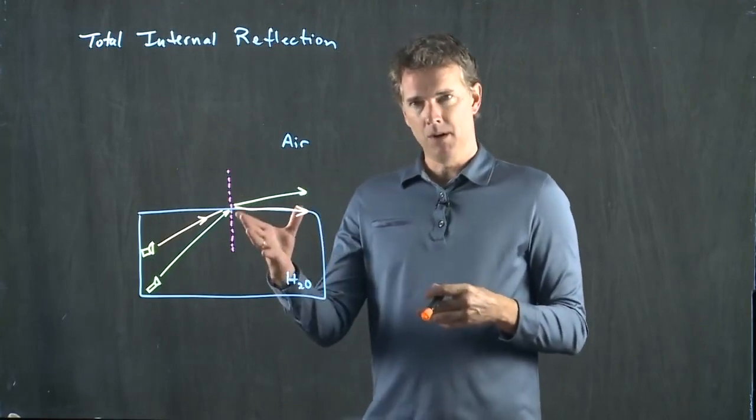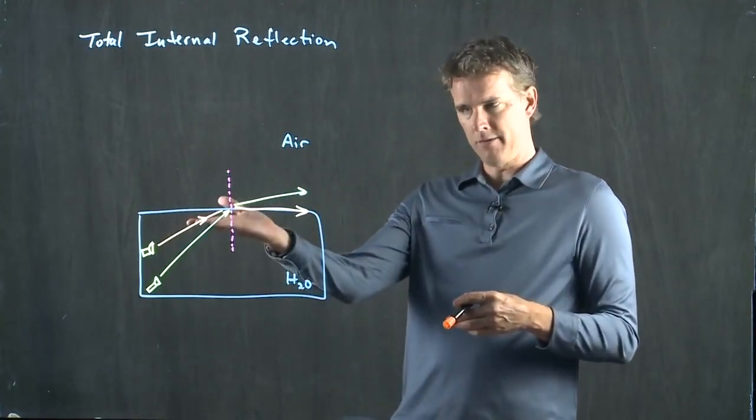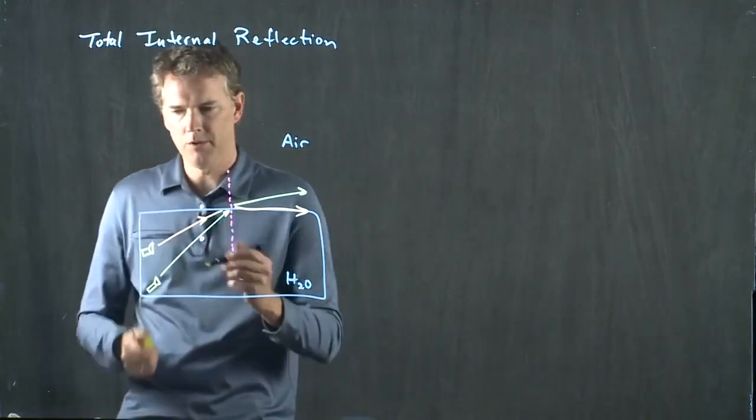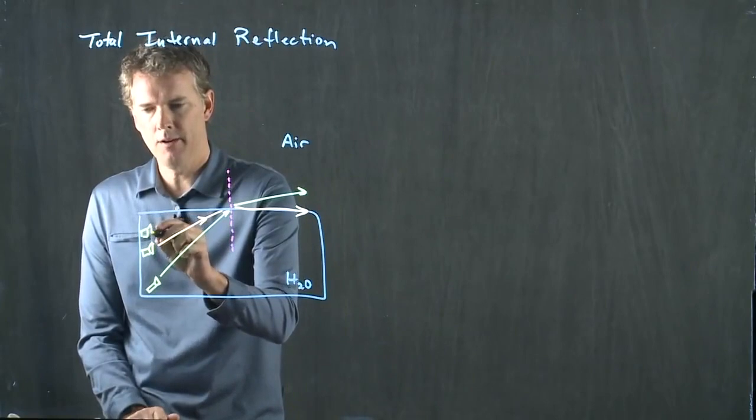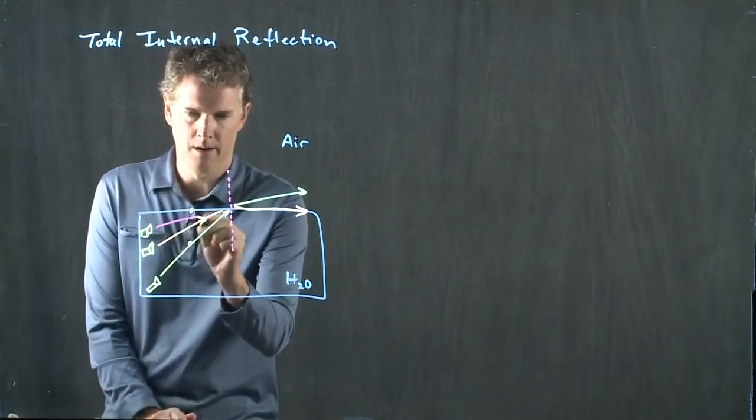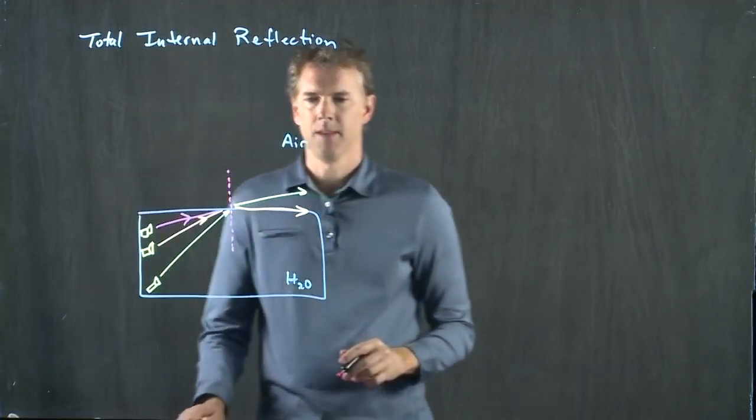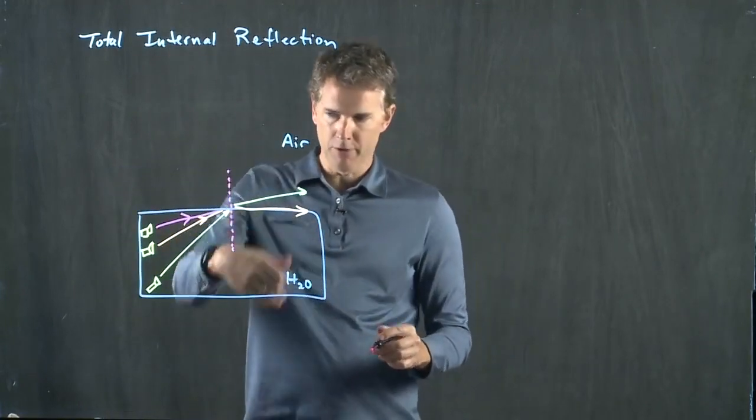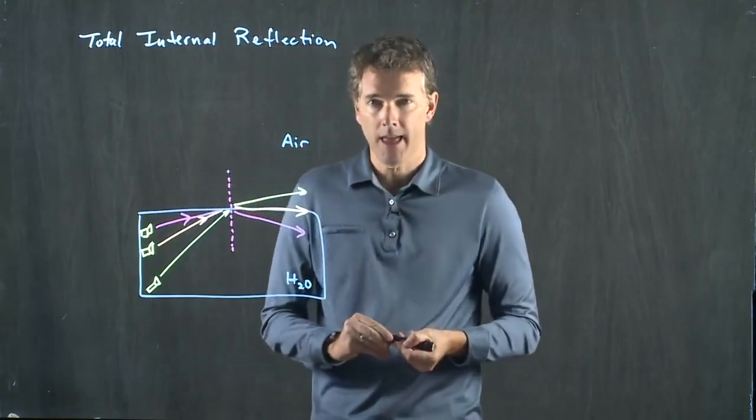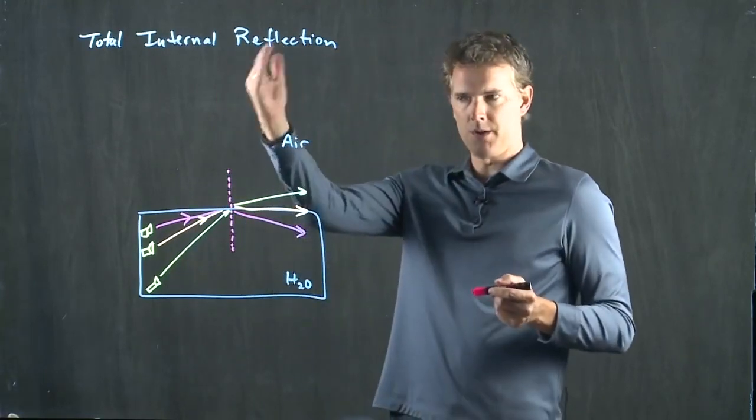And if I keep going, if I keep moving my flashlight up, eventually I'm going to get to a position where the light never leaves the water. I can't bend any further away from the normal, and so all the light does that, and that is what's called total internal reflection.